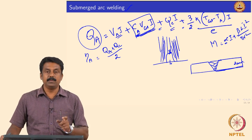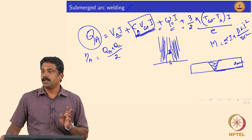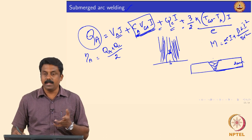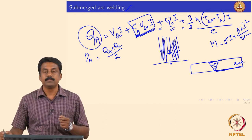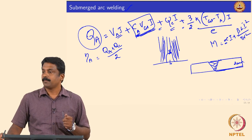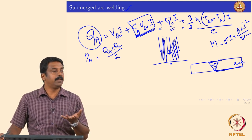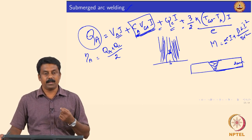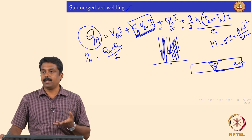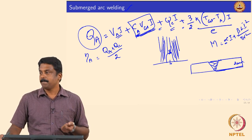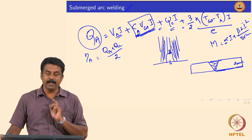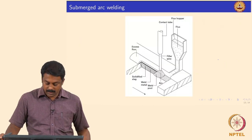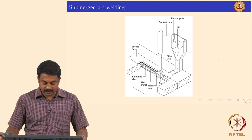With submerged arc welding, using a 3.5–4 mm wire, you can fill close to 20 mm in a single pass — so productivity increases significantly and the cost of welding decreases significantly. All of this comes from the increased efficiency achieved by containing the arc heat. That is why we need submerged arc welding, and the schematic is shown in this slide.